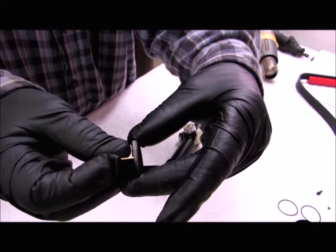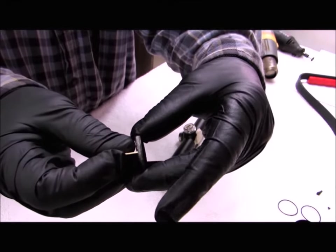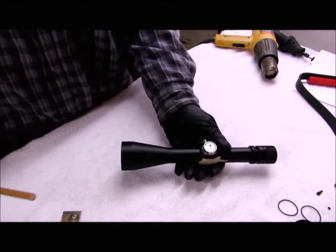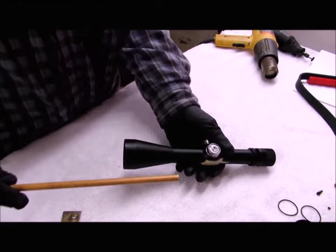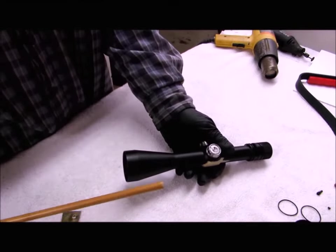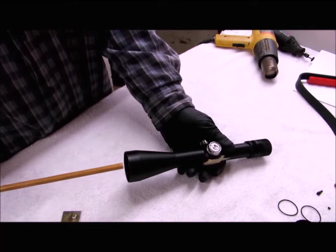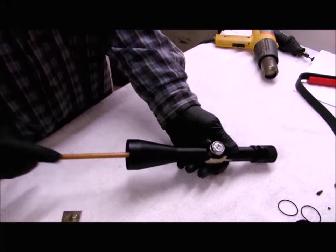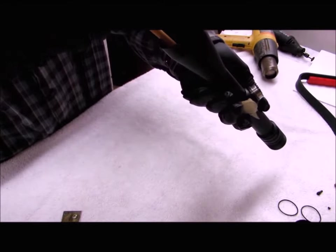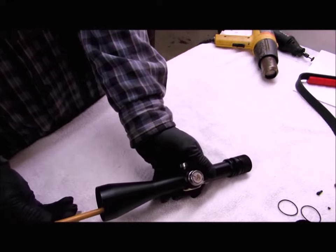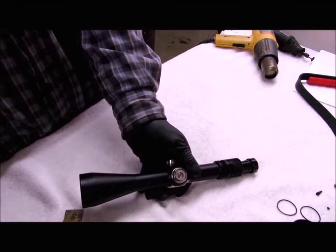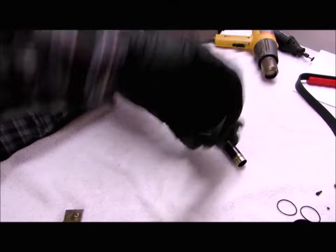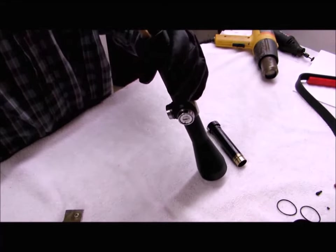When you get it hot enough, this will break loose pretty easily. You can see that white residue. That's the thread locker that's on that nut. Next, I'll push the erector out of the scope tube. I use a wooden dowel to do that. You could use a screwdriver. Just be careful that you don't slip and hit your lens. That's the reason I use this wooden dowel. I'll just go in and seat your wooden dowel on the end of the erector and push it out of the scope tube. There's a spring.